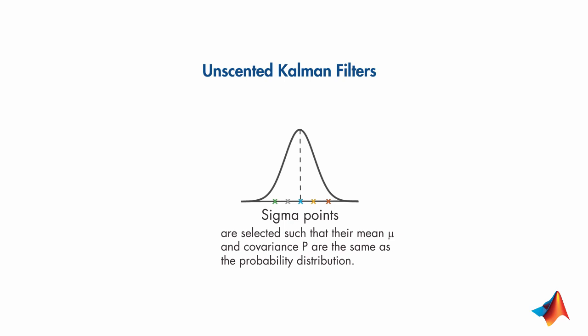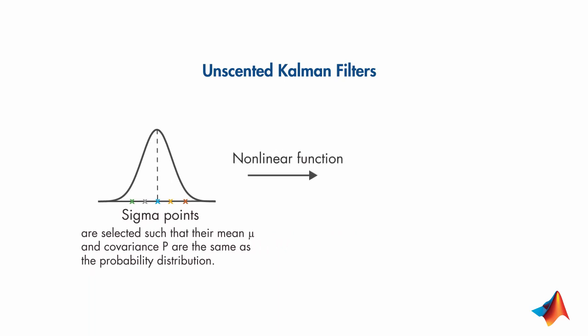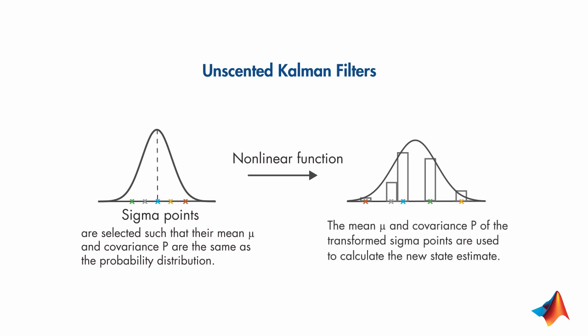These are referred as sigma points and are symmetrically distributed around the mean. Each sigma point is then propagated through the nonlinear system model. The mean and covariance of the nonlinearly transformed points are calculated and an empirical Gaussian distribution is computed, which is then used to calculate the new state estimate.